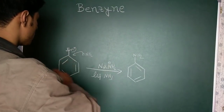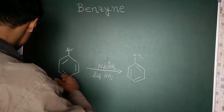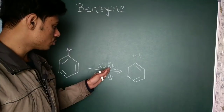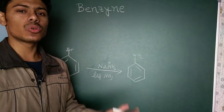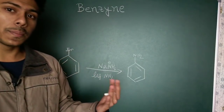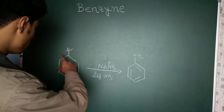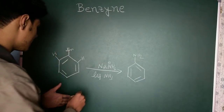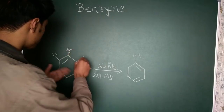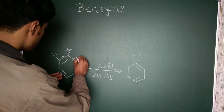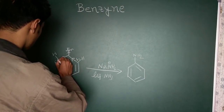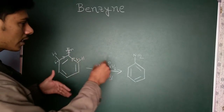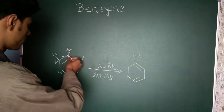NH2 minus is famous for its basicity, not its nucleophilicity — it is a very strong base. A strong base will always try to deprotonate. Looking at bromobenzene, the most acidic protons are the two ortho protons, because they are close to bromine. Bromine has a negative inductive effect (minus-I effect), which induces delta-plus at the ortho position, increasing the acidity of those ortho hydrogens compared to meta or para hydrogens.